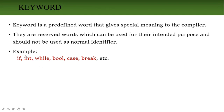For example, 'int' is a keyword already defined in C++. We cannot use 'int' as a name for a variable or anything else, because it is a keyword. These are reserved words — we cannot use them as normal identifiers. Keywords are predefined words that give special meaning to the compiler and are reserved words.